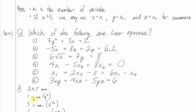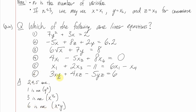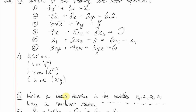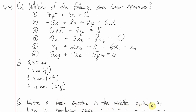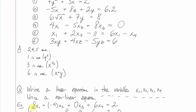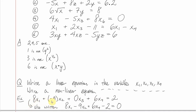As a test going the other way: write a linear equation in variables x₁ through x₄, then write a nonlinear one. An example of a linear equation is 8x₁ − 9x₂ + 0x₃ + 6x₄ = 2. You didn't have to pick those numbers. This could also be written skipping the zero term, or with a zero on the right side by subtracting 2 from both sides.